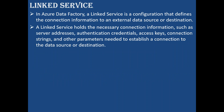A linked service holds the necessary connection information. It will hold the server address, authentication credentials — such as access keys, username, password — and connection strings, which will have the server name, database name, port number, username, and password. These are other parameters needed to establish the connection to the data source or destination.